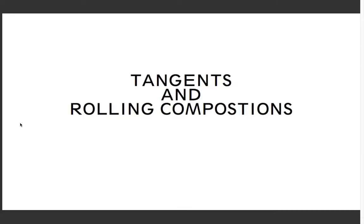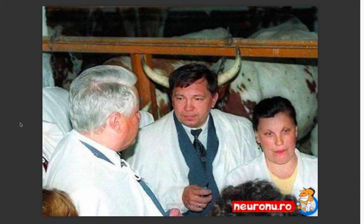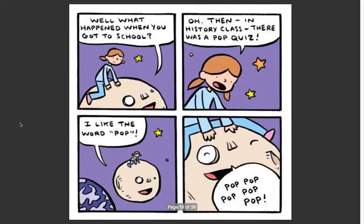Here's something else: these are called tangents, also heard as rolling compositions. You'll see pictures that combine with other pictures to create one larger image. Here's a funny example to start — this fellow is not really wearing bull horns, he just happens to be standing in front of a bull. We try to avoid those kinds of accidents in comics, but other times we can make them look really charming.